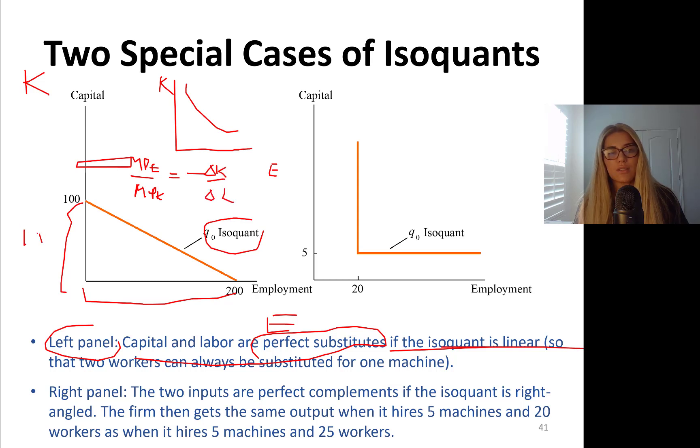And that is going to be negative delta K delta L, rise over run, 100, I'm just doing the easy one, divide by 200 units, negative 1 over 2. So I can substitute two capital units of capital, so two units of labor for one unit of capital, 2 to 1 rate. Let's take a look at this isoquant on the right-hand side.